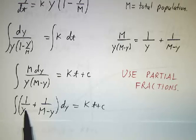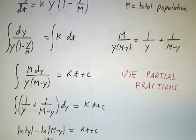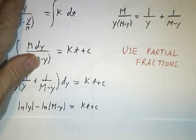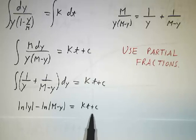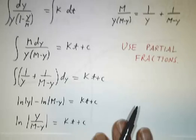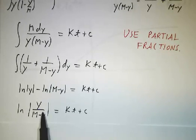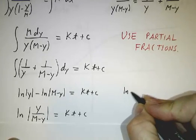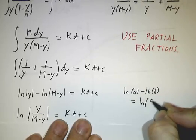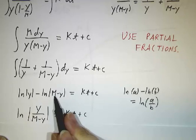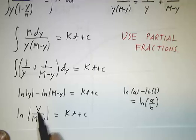And now the integral of 1 over y is log y. The integral of 1 over M minus y is minus log M minus y, because you do a u substitution where u equals M minus y and du is minus dy. So we have natural log of y minus natural log of M minus y is kt plus a constant. Or if you prefer, the log of y over M minus y, because the log of a minus the log of b is the log of a over b.